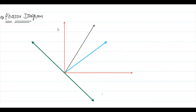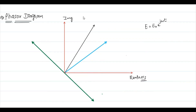For the phasor diagram, let the y-axis be the imaginary axis and the x-axis be the real axis. The applied EMF is E = E₀ e^(jωt). With respect to the real reference axis, E has already made an angle ωt — so it is positioned at angle ωt from the real axis.